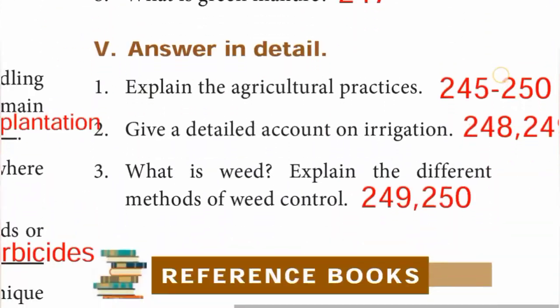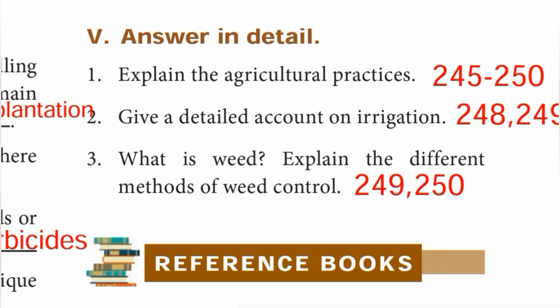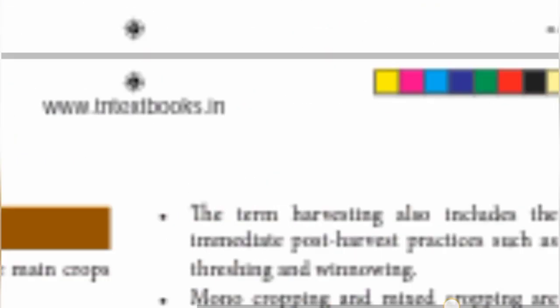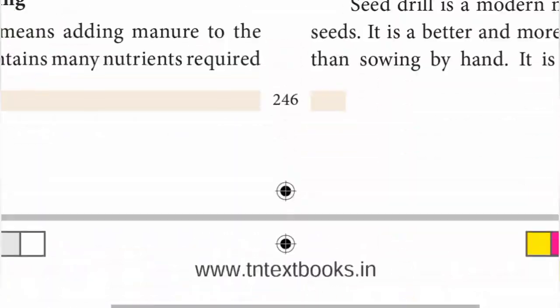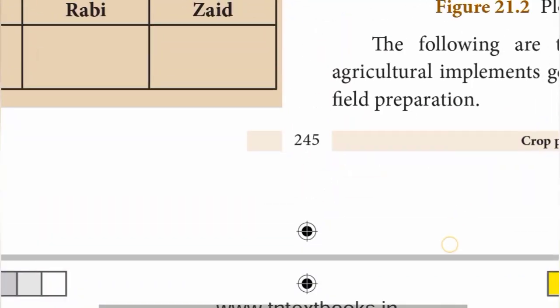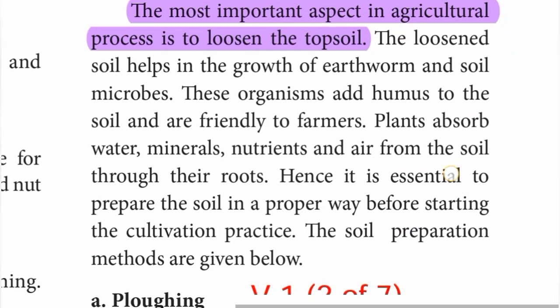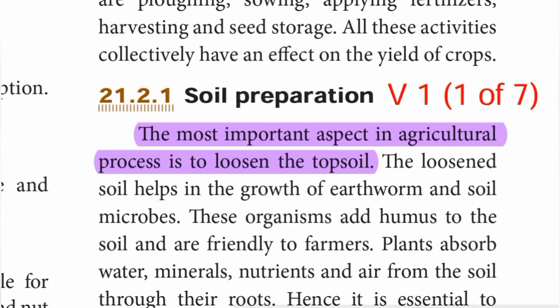Moving to Roman number 5: answer in detail. First one: explain the agricultural practices, pages 245 to 250. First, take page 245 — soil preparation heading. The most important aspect in the agricultural process is to loosen the top soil.